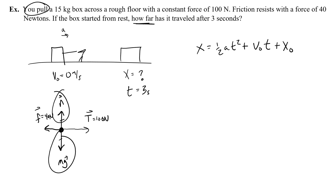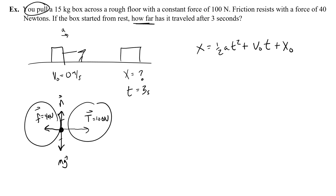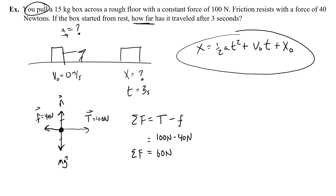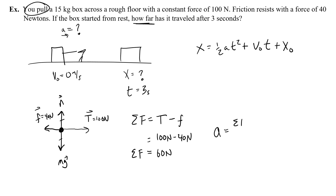The normal force and weight are balanced so they don't contribute. Tension and friction are the unbalanced forces. The net force equals tension minus friction, since tension is to the right and friction is to the left: 100 minus 40 equals 60 newtons. Using acceleration equals net force over mass: 60 newtons divided by 15 kilograms gives an acceleration of 4 meters per second squared.